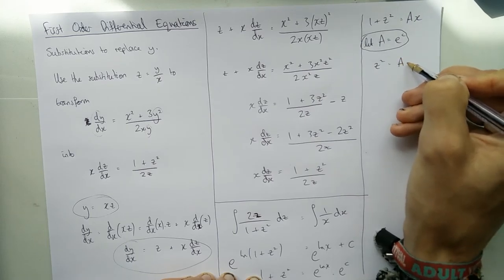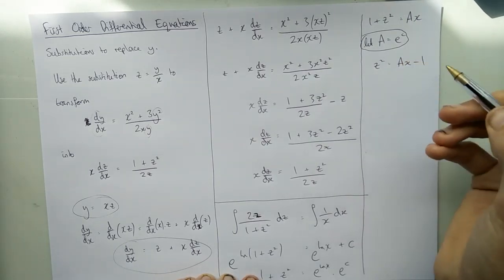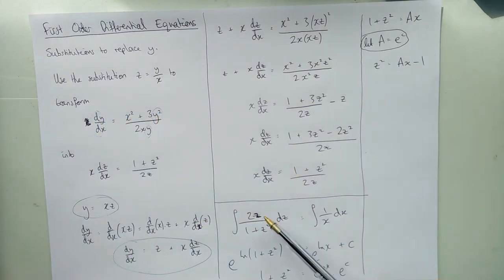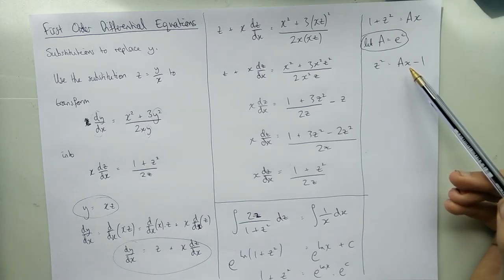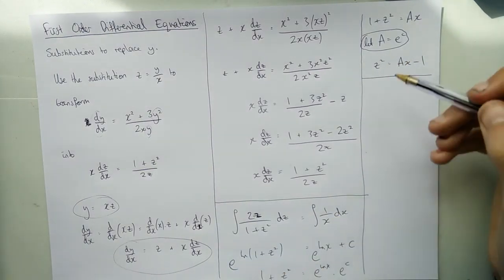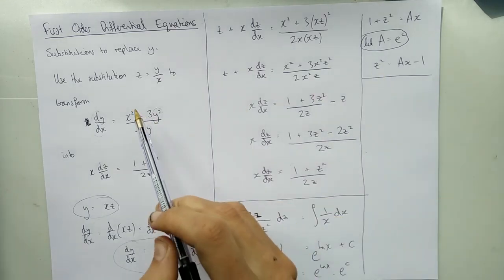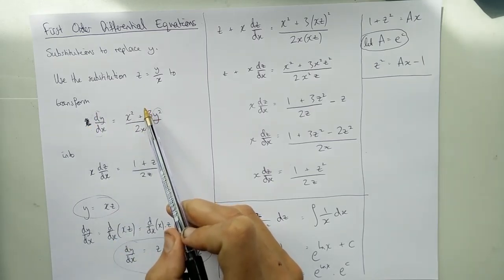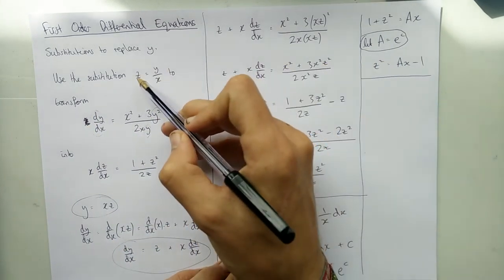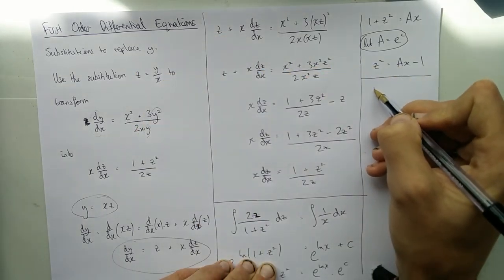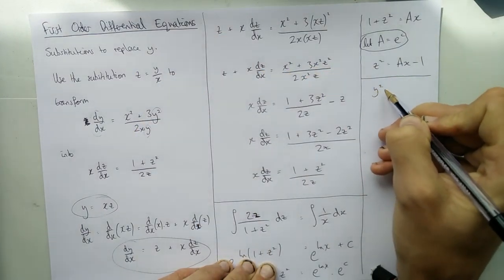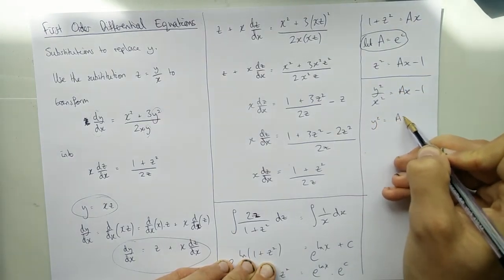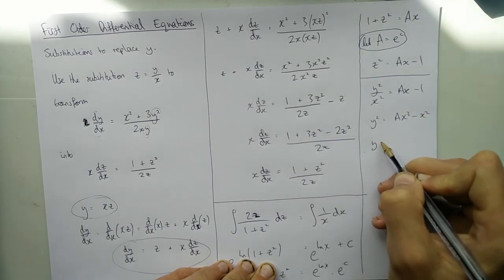And then we can rearrange - we've got z squared equals ax minus 1. You can square root that if you like. But we were trying to solve this differential equation dy/dx, weren't we? So although I've solved the z one, at this point here, you can change again. Normally you go back to using your substitution and replacing it for y, so you can get a solution to this one in terms of y. So we take the z squared - that must be y over x, squared. Times by the x squared. And then we can square root that.